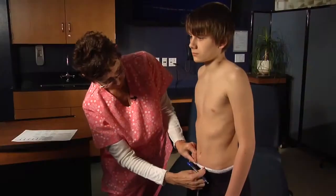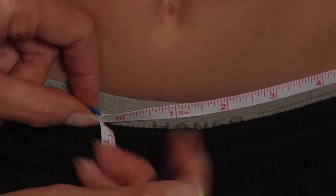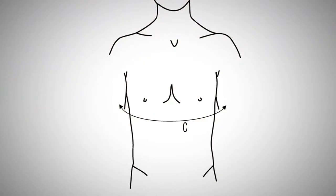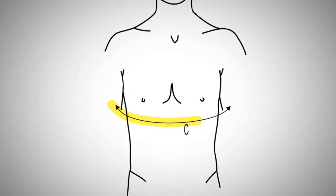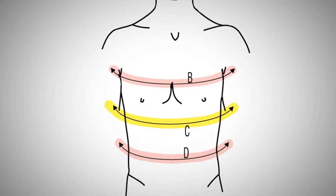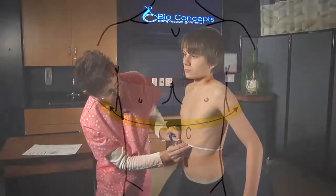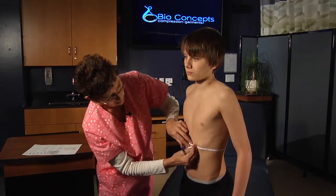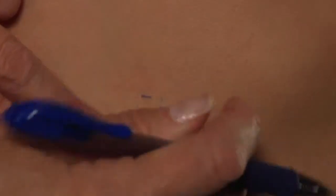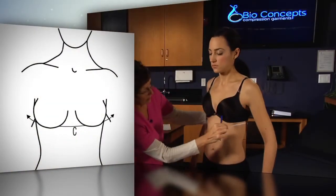Make sure you make a mark on the anterior torso where the capital D circumference is taken. For the adult male or child of either gender, the capital C measurement is halfway between the circumferences of capital B and capital D. Make sure you make a mark on the anterior torso where the capital C circumference is taken.